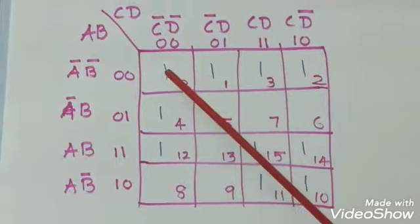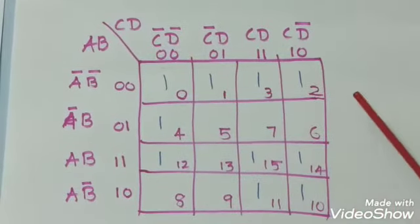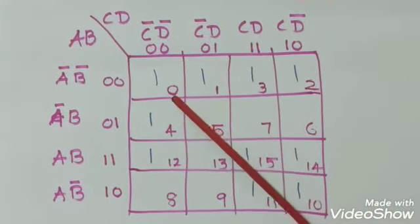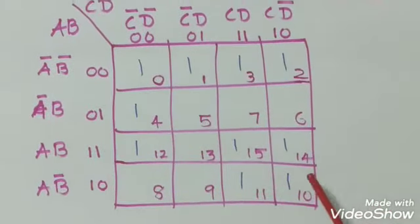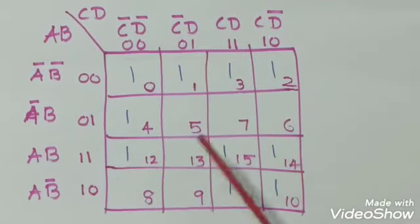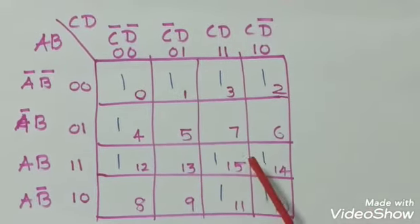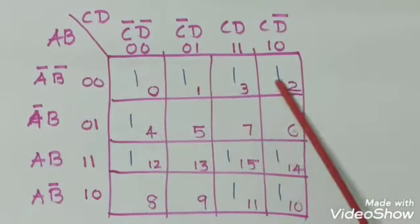Write 1 in the numbers given in the question. The numbers are 0, 1, 2, 3, 4, 10, 11, 12, 14, 15. Write 1 in these boxes.